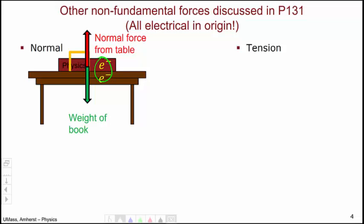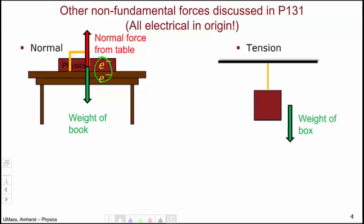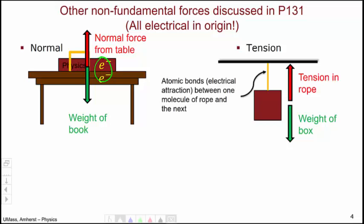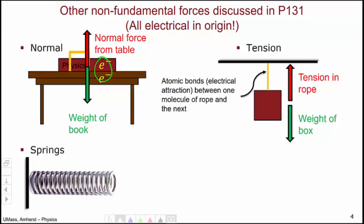Another force discussed in 131 is the idea of tension. For example, when a block is hung by a string, you have the weight of the block being countered by the tension in the rope. Where does this tension ultimately come from? This tension comes from the atomic bonds, which are fundamentally electrical attraction between one molecule of rope and the next. Similarly, springs — the spring force, Hooke's Law, is a result of atomic bonds, so electrical at the microscopic scale. And finally, the frictional forces arise from van der Waals interactions between the molecules in different surfaces — once again, you're talking about the electrical interactions between atoms.